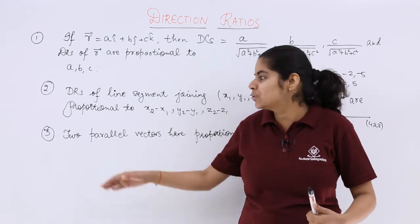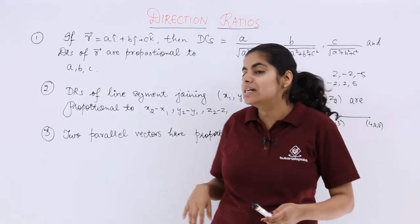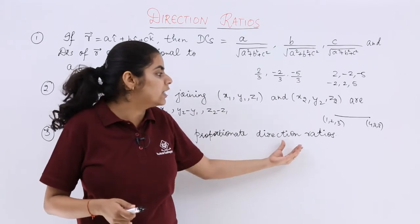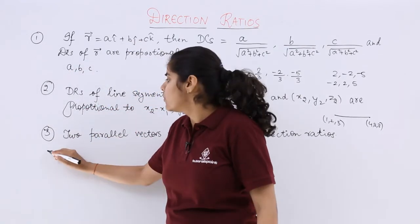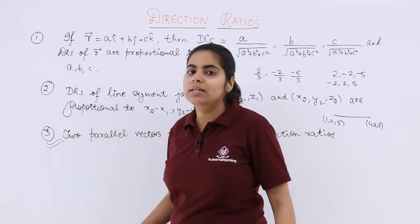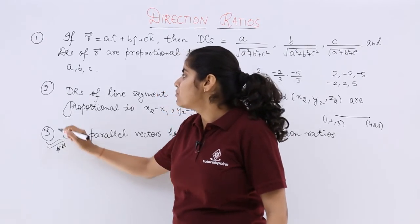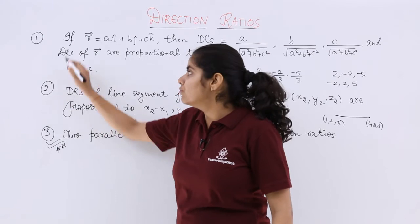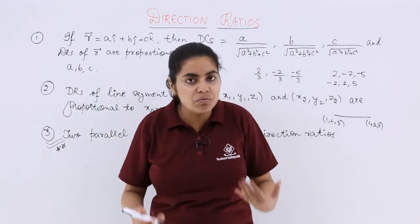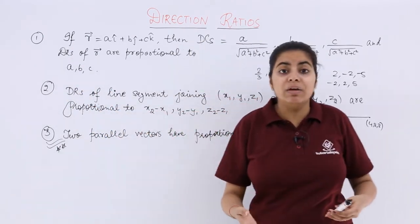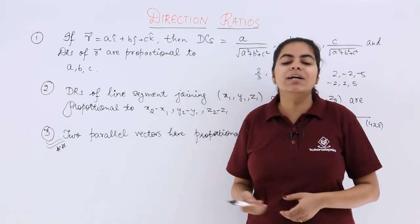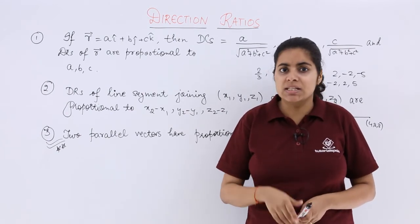Next point. When you have understood this, two parallel vectors have proportional direction ratios. Now this holds a wide importance. We will see questions based on this property. By far by now, these are the three very important points. We will discover more points when we see the questions based on direction ratios as well as direction cosines.